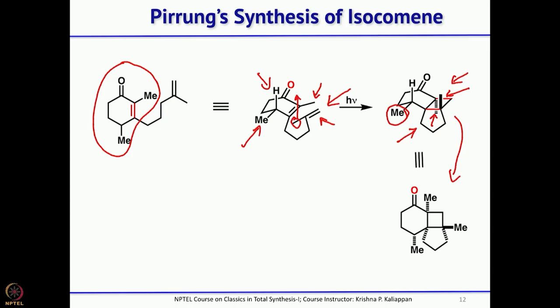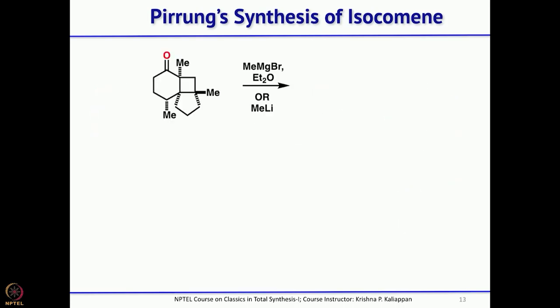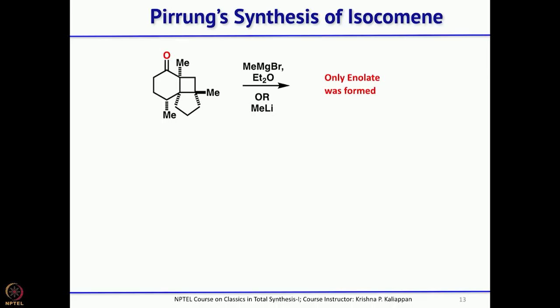The first key reaction — intramolecular [2+2] photocyclization — worked very well to give the tricyclic compound. Next, adding methyl Grignard or methyl lithium to get the tertiary alcohol, followed by acid treatment, should generate the carbocation and then trigger a Wagner-Meerwein rearrangement to give isocomane. However, both methyl magnesium bromide and methyl lithium acted only as bases — only the enolate formed — so alternatively, a simple Wittig reaction gave the precursor for the Wagner-Meerwein rearrangement.